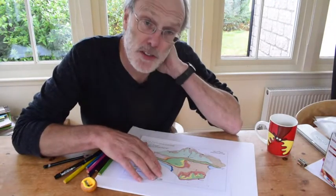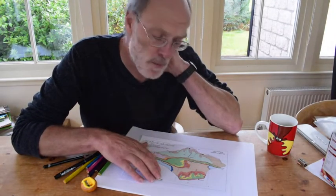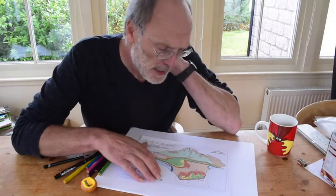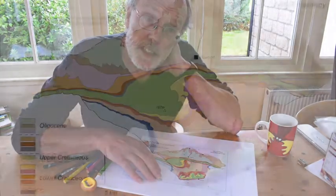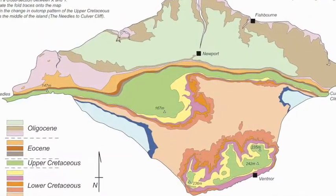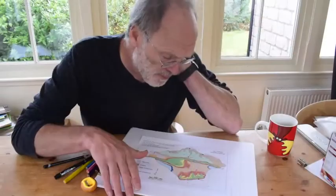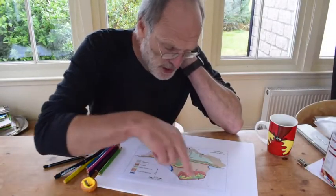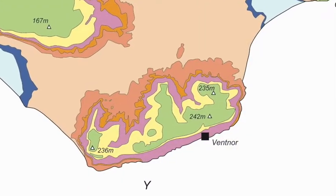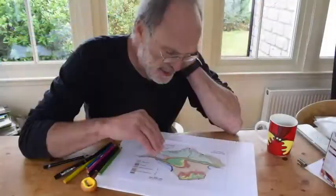This is a simplified version of a really classic geological map of the Isle of Wight. It's a great place for building up skills in map interpretation and cross-section construction. What we have is the coastline, of course, and we've got various elevations on here that we can use to get an idea of the landscape.